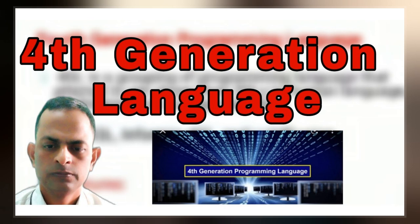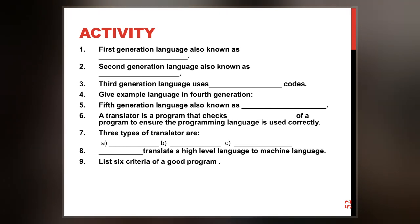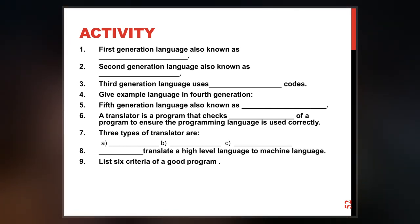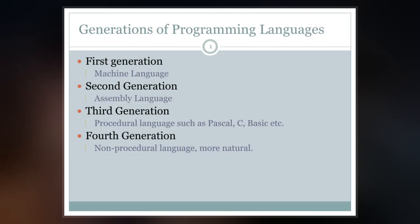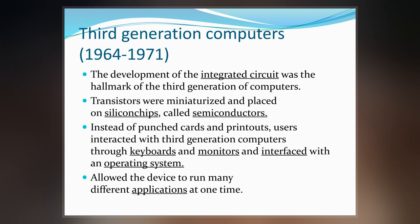Some researchers state that 4GLs are a subset of domain-specific languages. The concept of 4GL was developed from the 1970s through the 1990s, overlapping most of the development of 3GL, with 4GLs identified as non-procedural or program-generating languages, contrasted with 3GLs being algorithmic or procedural languages.